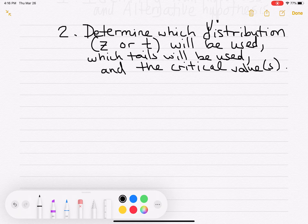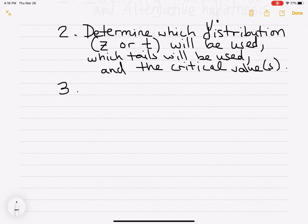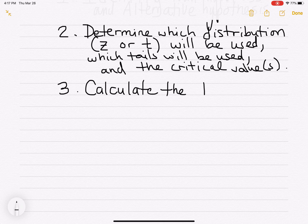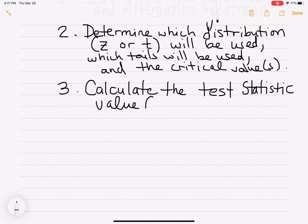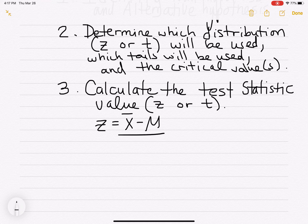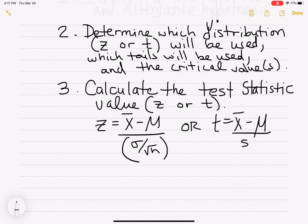Step three: calculate the test statistic value, which will be a value for either Z or T. You either use Z equals x-bar minus mu over sigma over root N, or T equals x-bar minus mu over S over root N. You calculate that value based on your sample information and all the other given information.